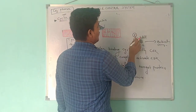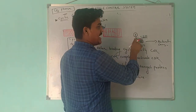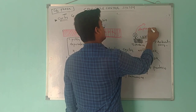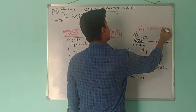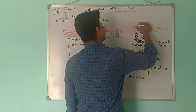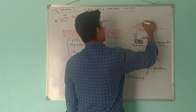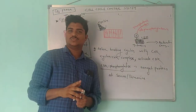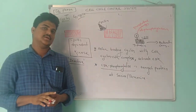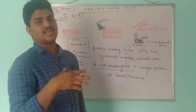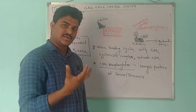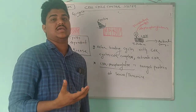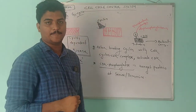After the cyclin-CDK complex breaks, the target proteins which have already been phosphorylated will undergo dephosphorylation by phosphatase. One important thing to remember is that at each stage of the cell cycle, different types of cyclin proteins are activated or synthesized, and accordingly different target proteins are phosphorylated by the CDK.